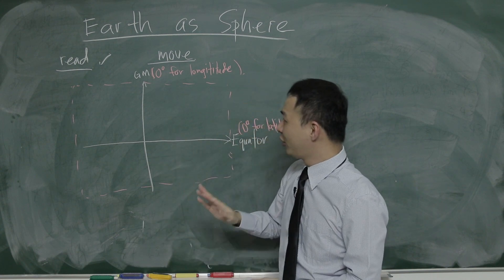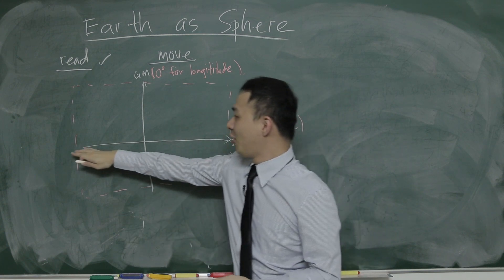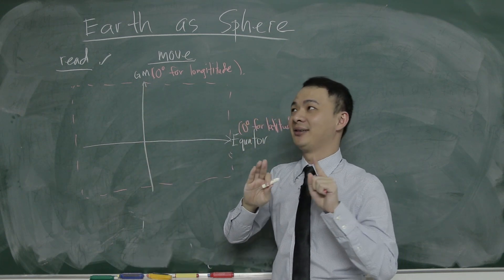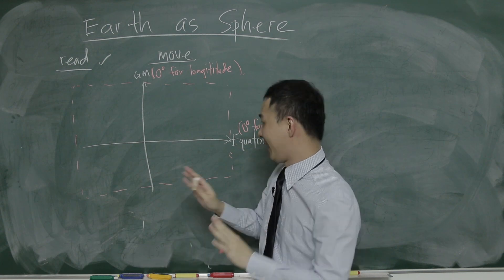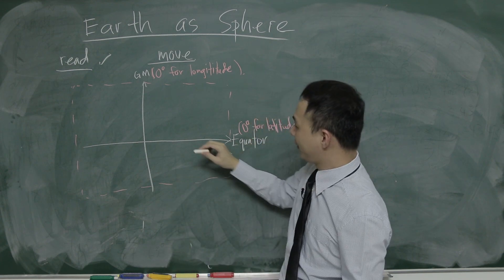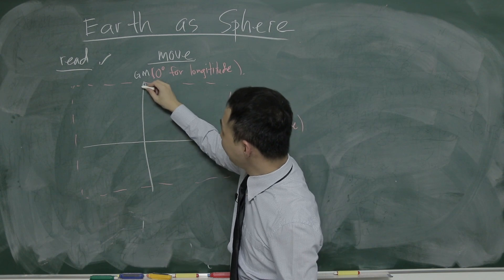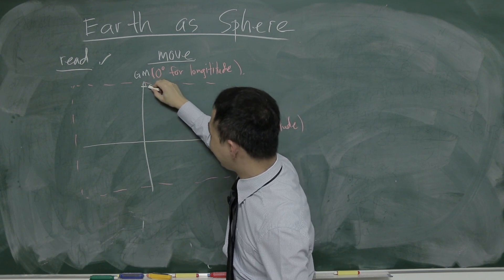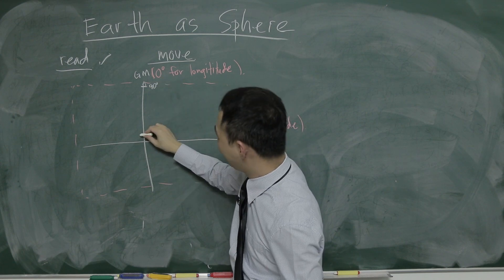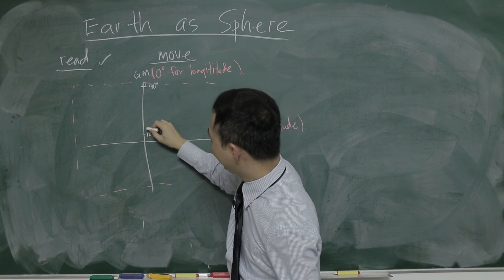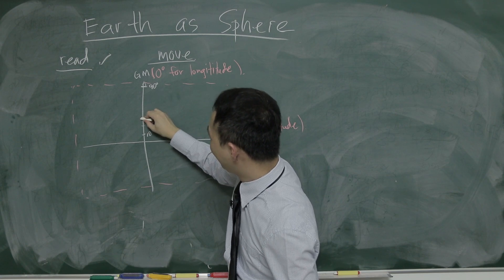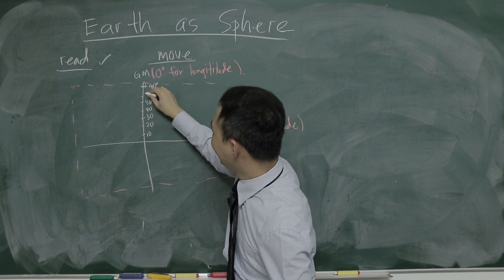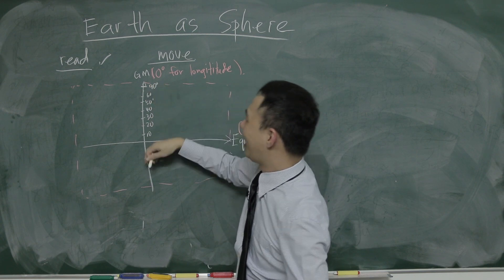Now you have to understand that this axis is basically calculated by degree — the angle. For latitude, your maximum degree is 90 degrees. So you get the idea: you have 10, 20, 30, 40, 50, 60, 70, and up to 90.